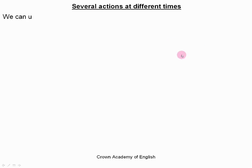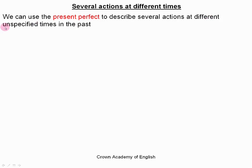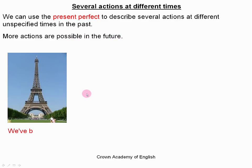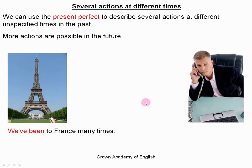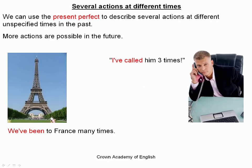Several actions at different times. We can use the present perfect to describe several actions at different unspecified times in the past, and more actions are possible in the future. 'We've been to France many times.' 'I've called him three times.' Mark has called somebody three times, and since more actions are possible in the future, maybe he has the intention of calling a fourth, fifth, or sixth time — he's not finished. But so far in the past, he has called three times.